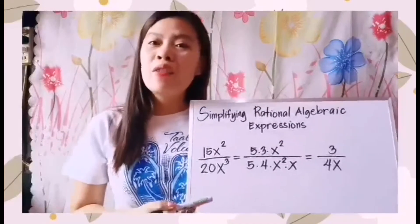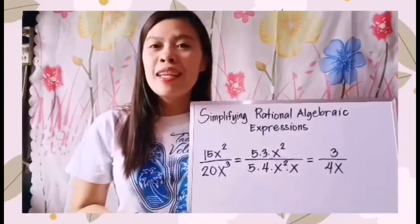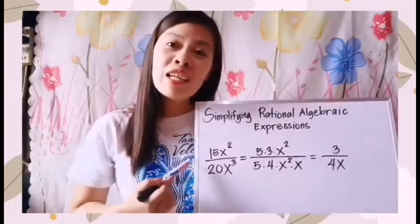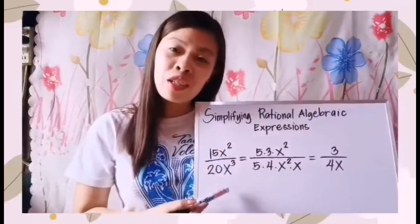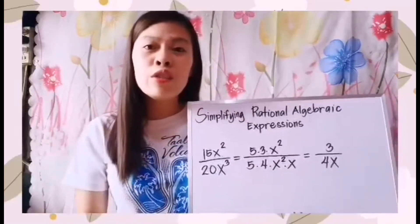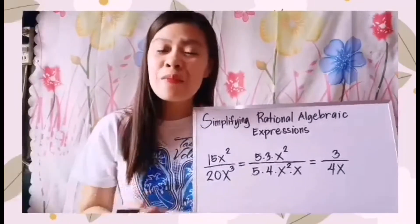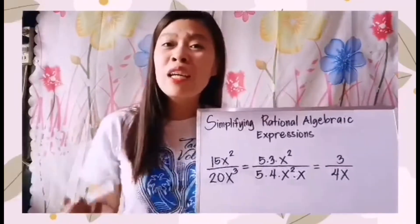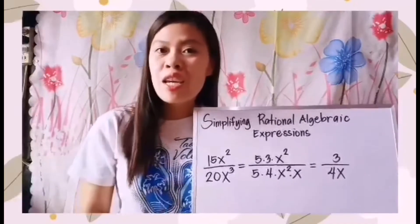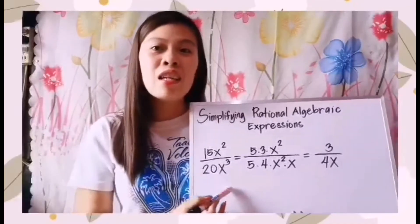Let us now have our first example. Our task is to simplify our given rational algebraic expression into its lowest form. This is the time that we are going to apply our previous learnings, especially factoring.